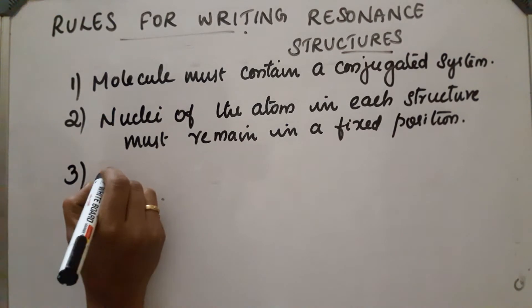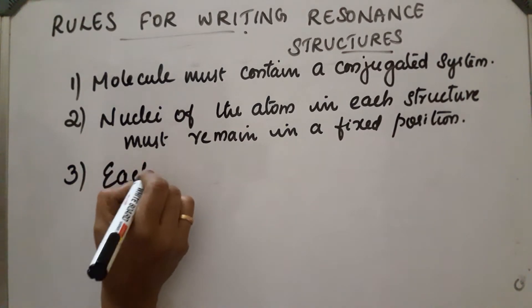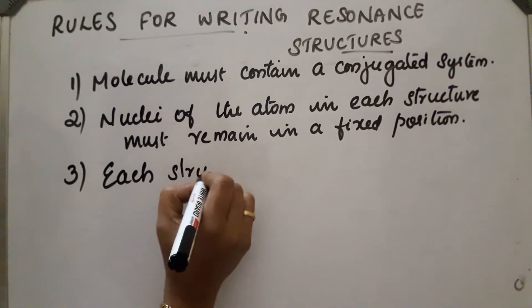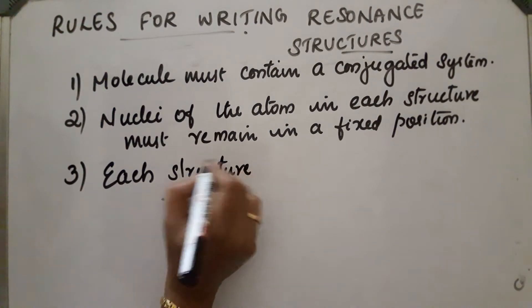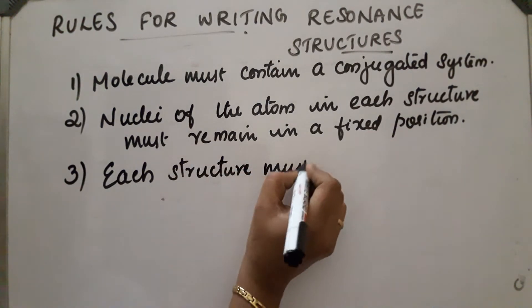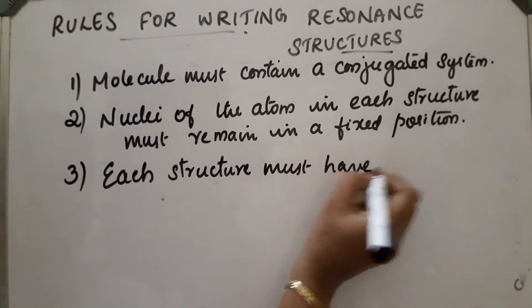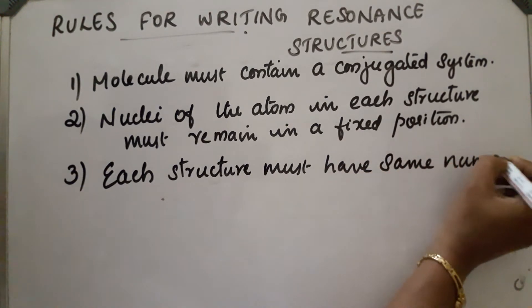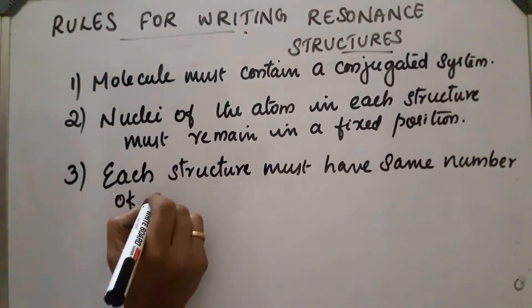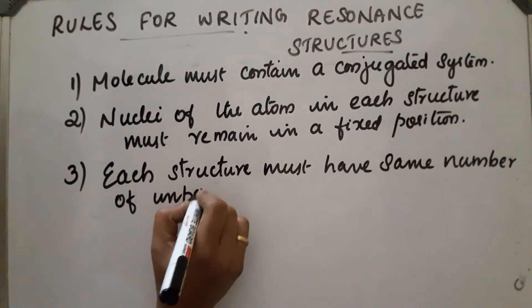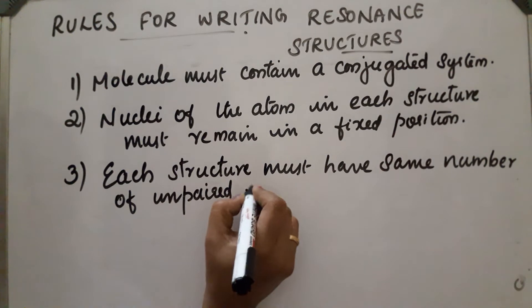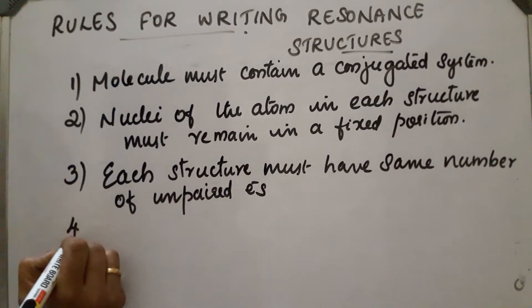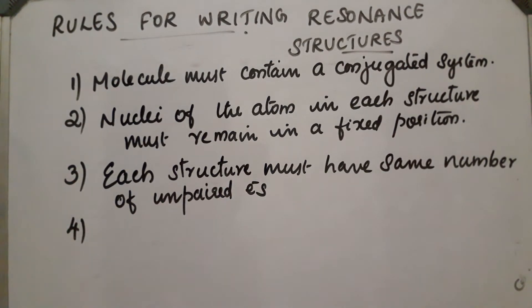Third rule: each resonance structure must have the same number of unpaired electrons.